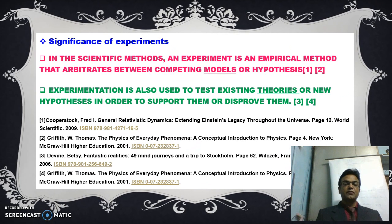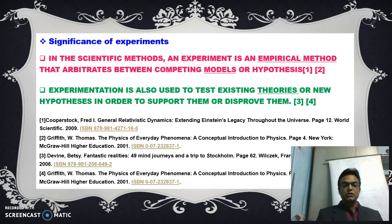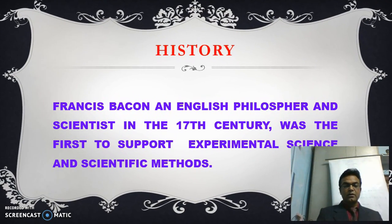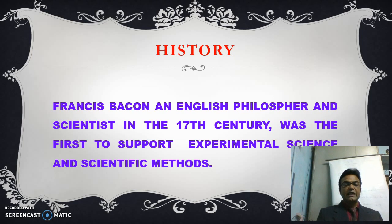What are the various significances of experiments? In any scientific method, an experiment is an empirical method that arbitrates between competing models or hypotheses. Experimentation is also used to test existing theories or new hypotheses in order to support or disprove them. The term experiment was first used by Francis Bacon in the 17th century. He was an English philosopher who always advocated experimental science and scientific methods.